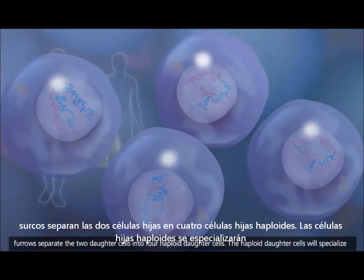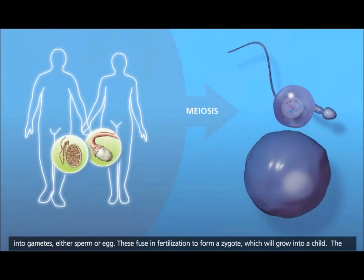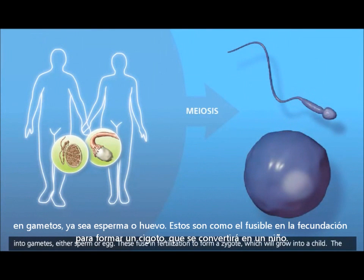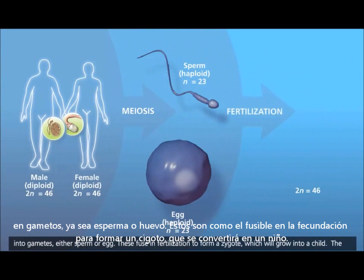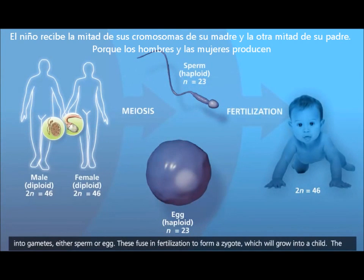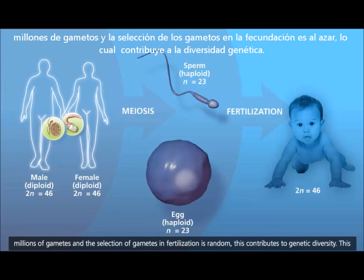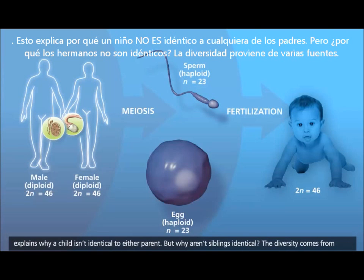The haploid daughter cells will specialize into gametes, either sperm or egg. These fuse in fertilization to form a zygote, which will grow into a child. The child receives half its chromosomes from its mother and half from its father. Because men and women produce millions of gametes, and the selection of gametes in fertilization is random, this contributes to genetic diversity and explains why a child isn't identical to either parent.